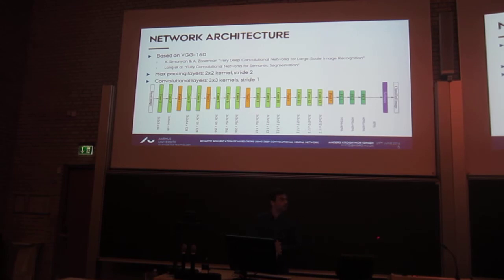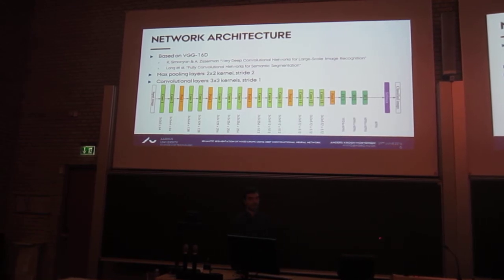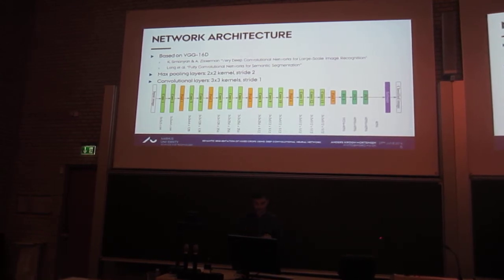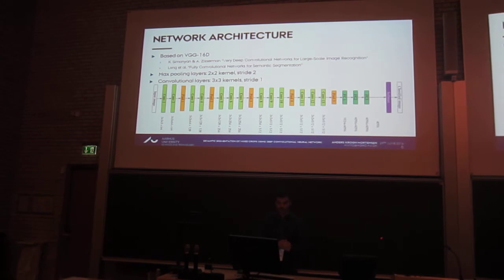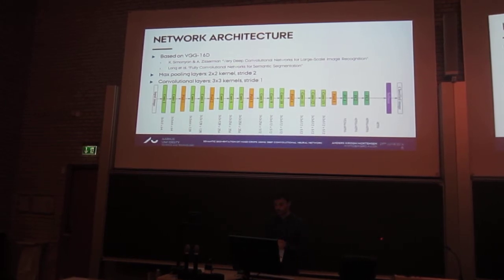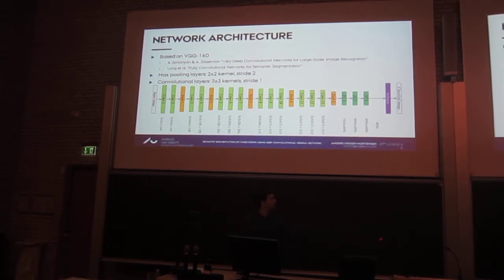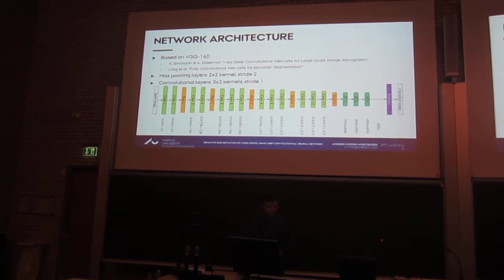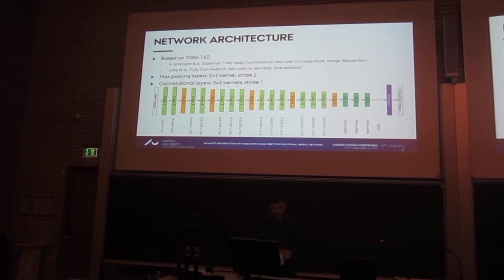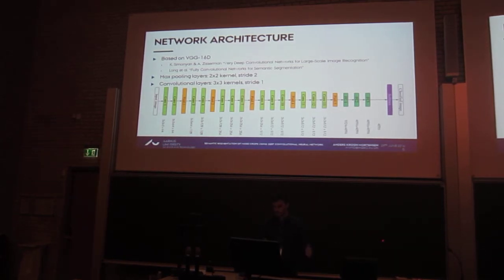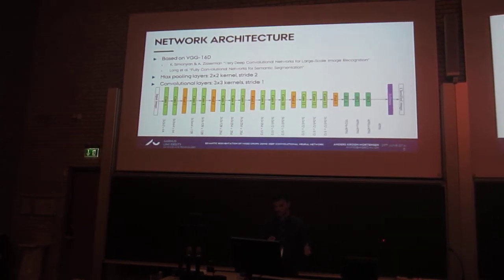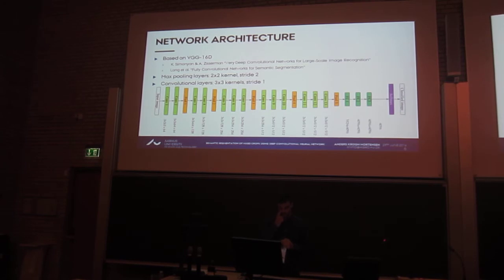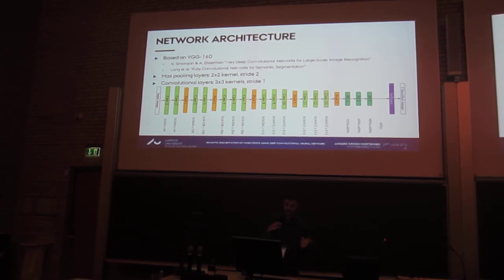The interesting part is how do we distinguish these crops. The approach I looked into here was deep learning or deep convolutional networks. You can see the network here at the bottom where we have 16 convolutional layers and then 5 pooling layers.